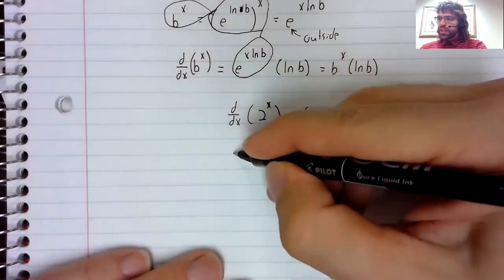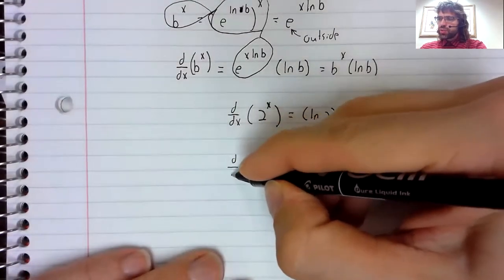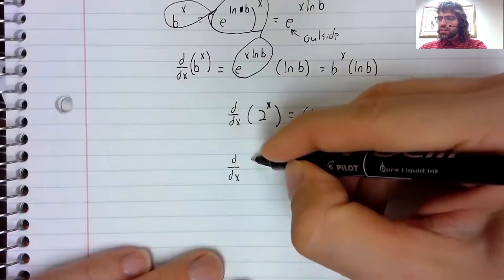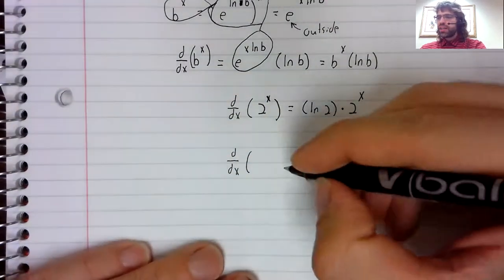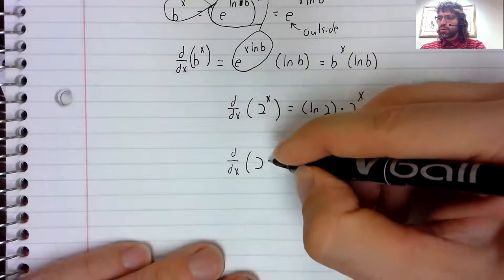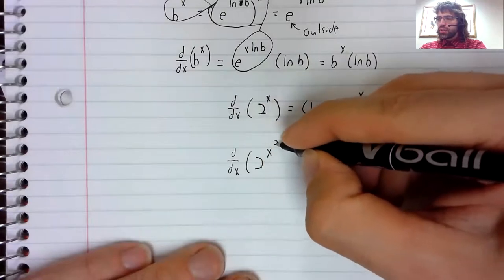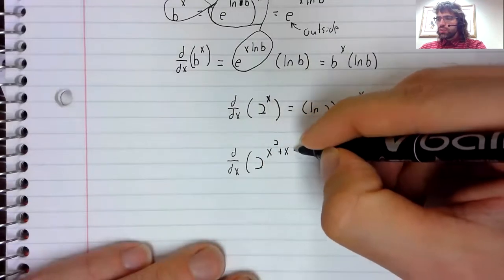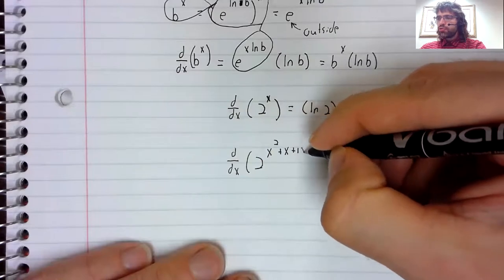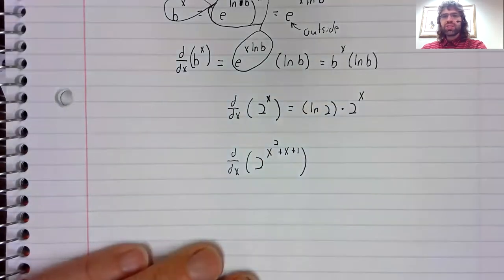If we had, let's do a slightly more complicated example before we go. Two to a quadratic, let's say.